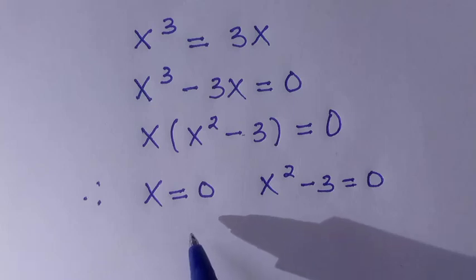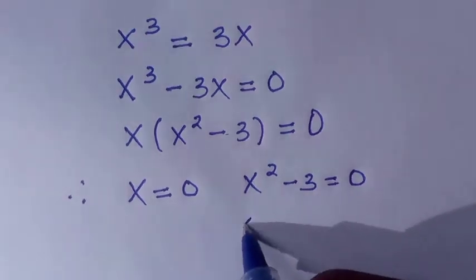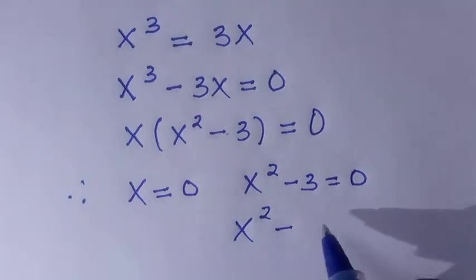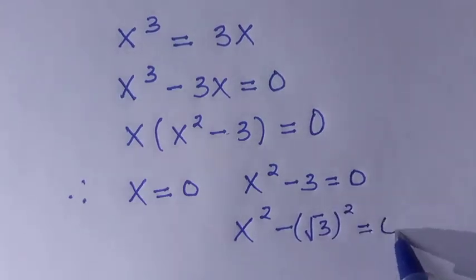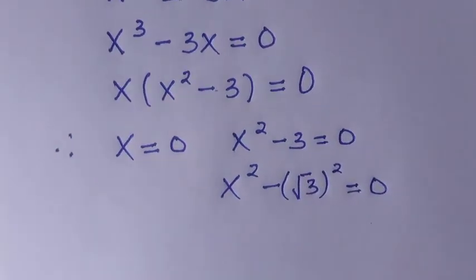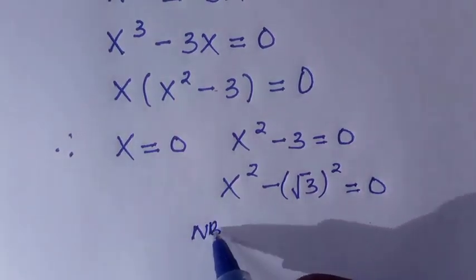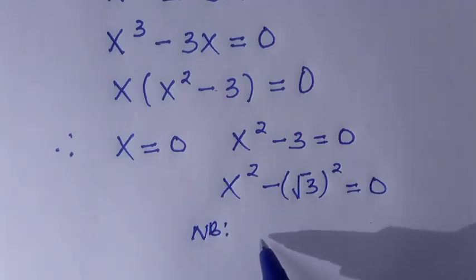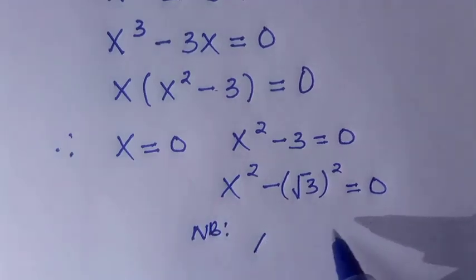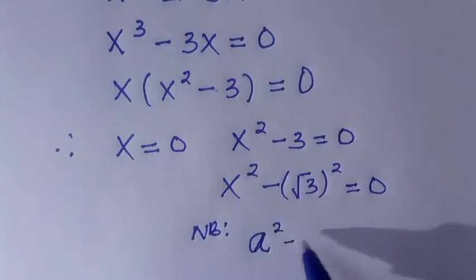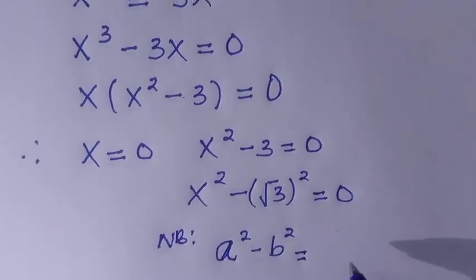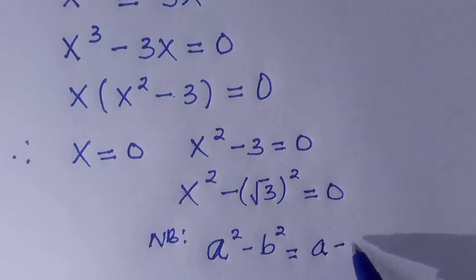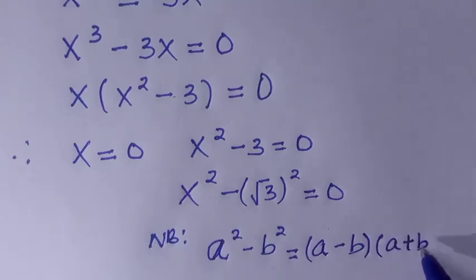We are going to consider this second one. We have x to the power of 2, we can write this as x² minus (√3)² equals 0. By considering difference of two squares, we have a² minus b² equals a minus b times a plus b.